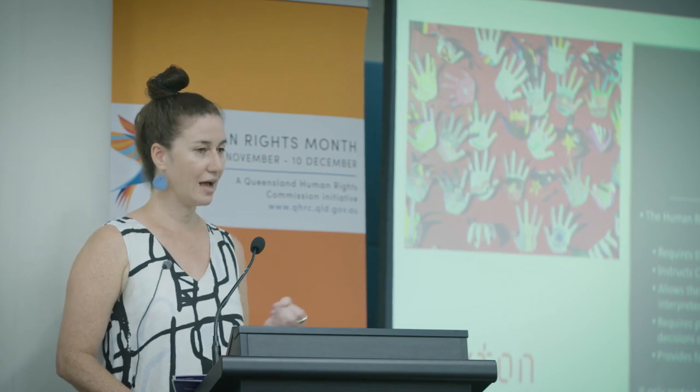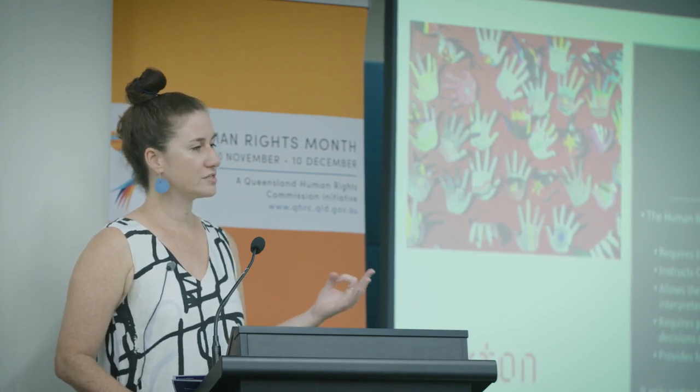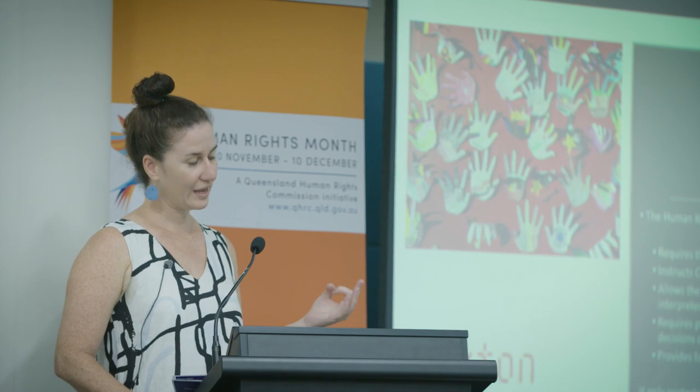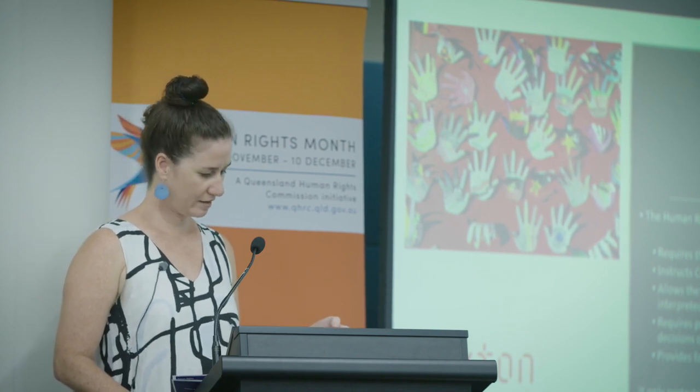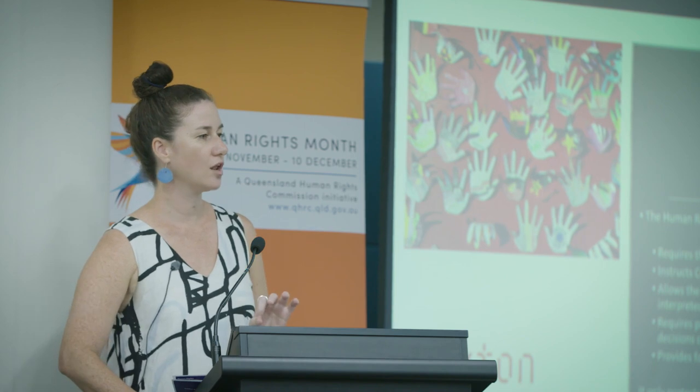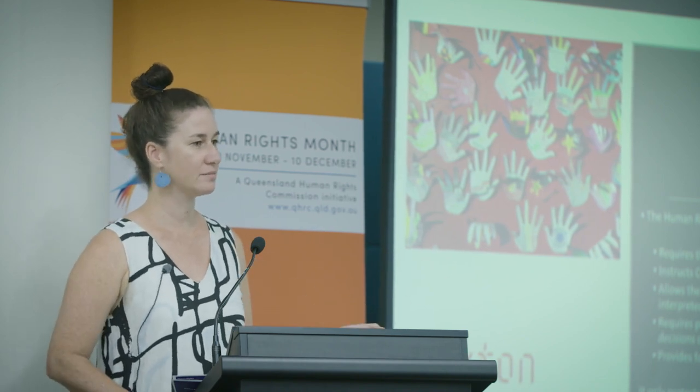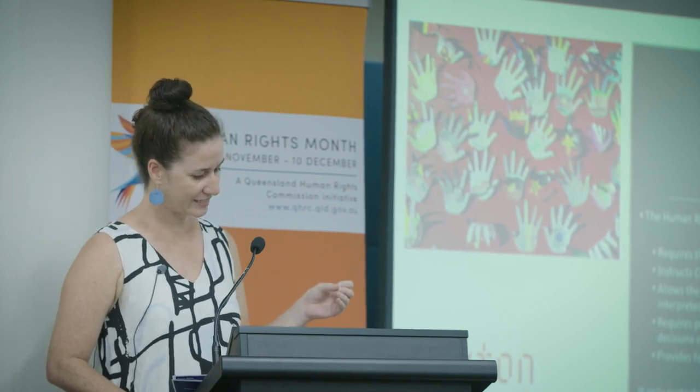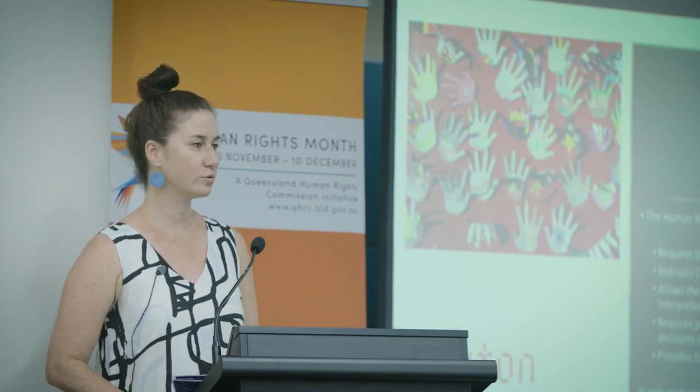Courts and tribunals must interpret other laws in line with human rights principles. Thirdly, the Supreme Court can make certain declarations if it identifies that a law cannot be interpreted in a way that respects human rights, and this opens a dialogue between the courts and the Parliament, alerting Parliament to problems in the legal system. Fourth — and this is where we are mostly going to focus today — public entities will need to consider human rights and act and make decisions in a way that is compatible with human rights. And finally, people can make complaints to the Queensland Human Rights Commission and add human rights legal arguments to other sorts of cases that they might be able to bring.